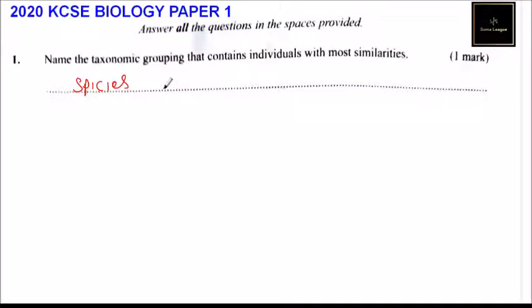We may also have cows. Cows come in various types — they are similar, but they are of various species. For example, we have Friesian and other varieties.